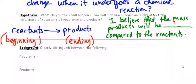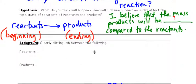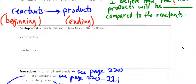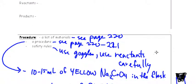Background. I want you to define reactants and products. So, I kind of just defined that already, so it should be fairly easy. Procedure. Basically, page 220 to 221 of the textbook. You need to wear goggles. Use the reactants carefully.